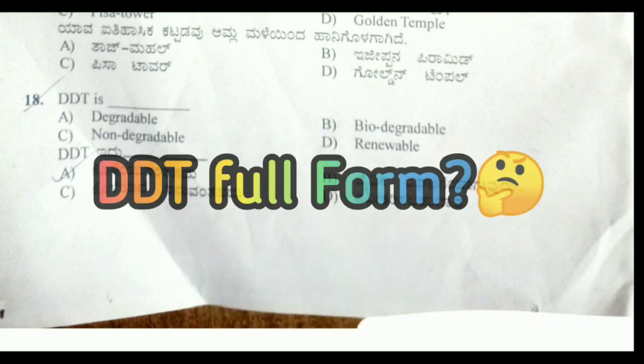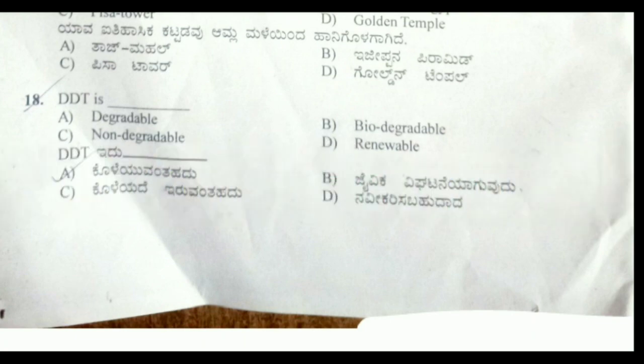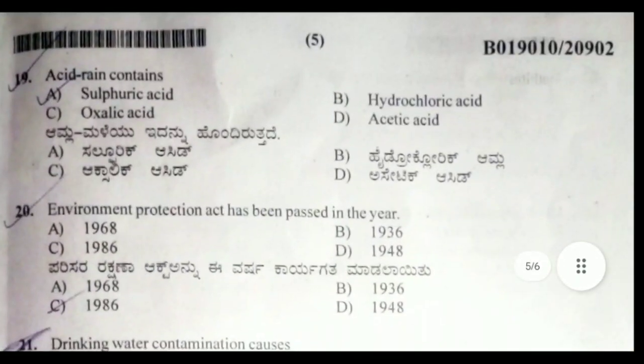The answer to the DDT question is to be posted in the comment section. Nineteenth question: acid rain contains sulfuric acid.